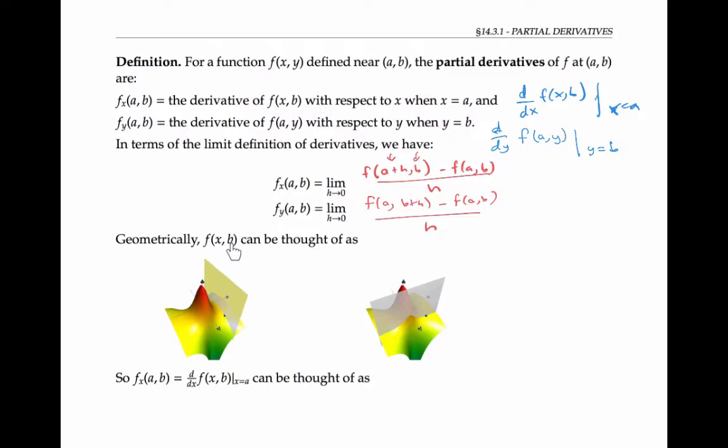Geometrically, when we fix y constant at b and let x vary, that's like intersecting our surface z equals f of xy drawn here with the plane y equals b that's parallel to the xz plane.